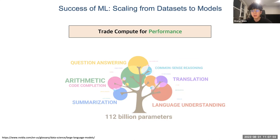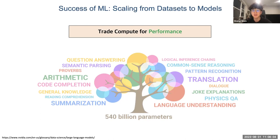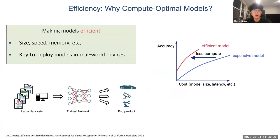However, for us to be more practical, we want to make models both efficient and scalable so that we can ensure this scaling. One factor is to make the model more efficient, considering both size, speed, and memory, which is paramount to real-world applications.